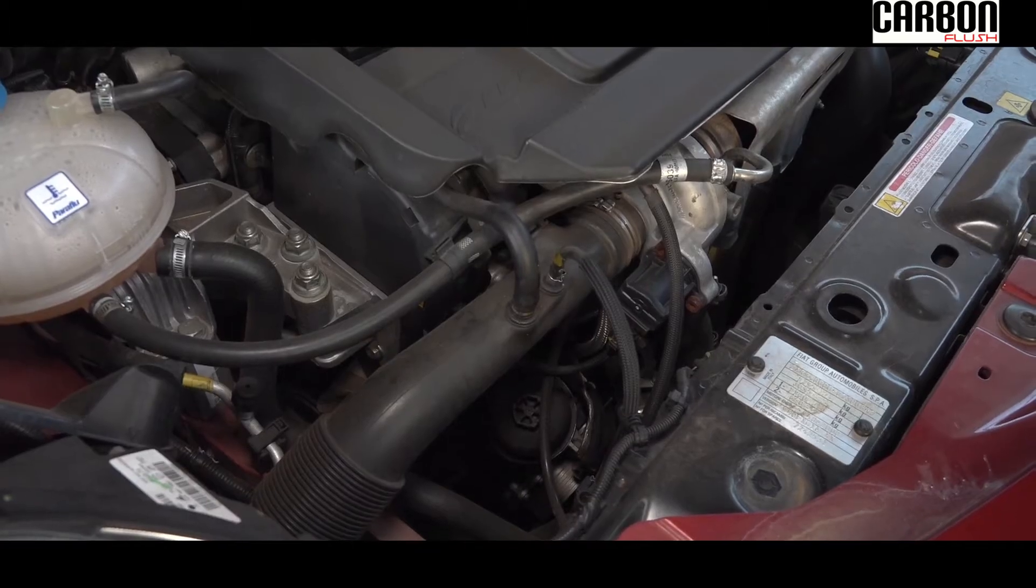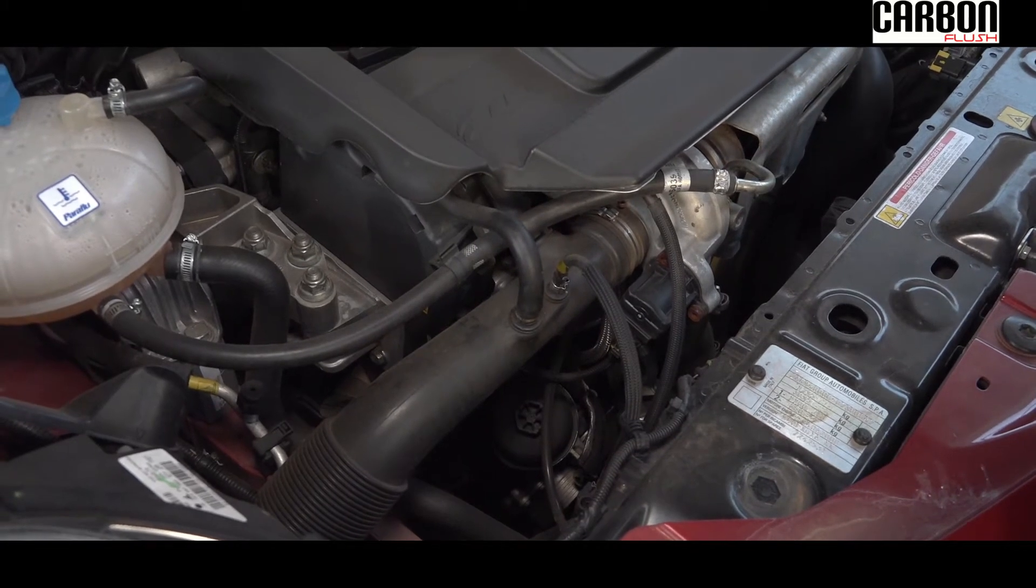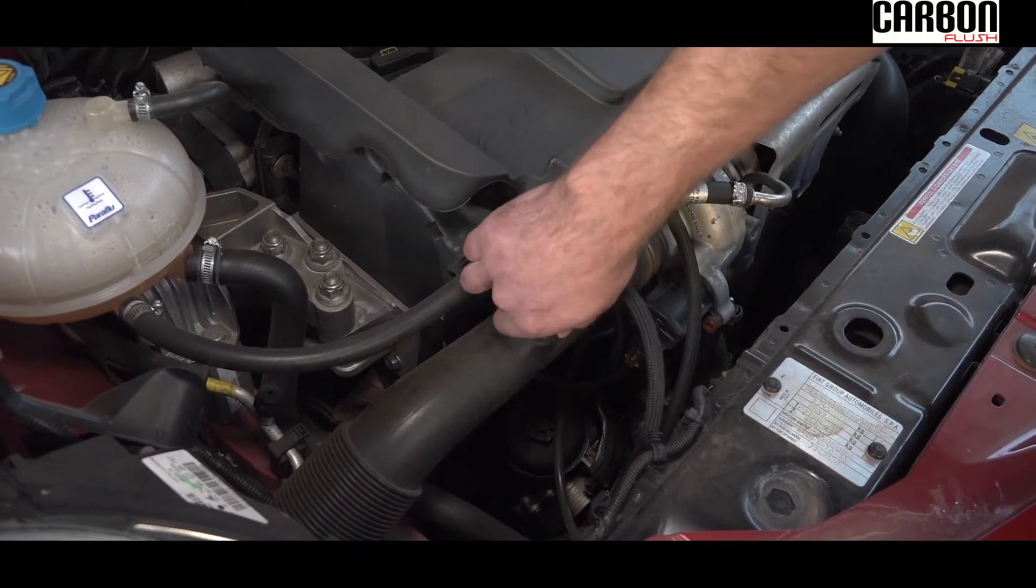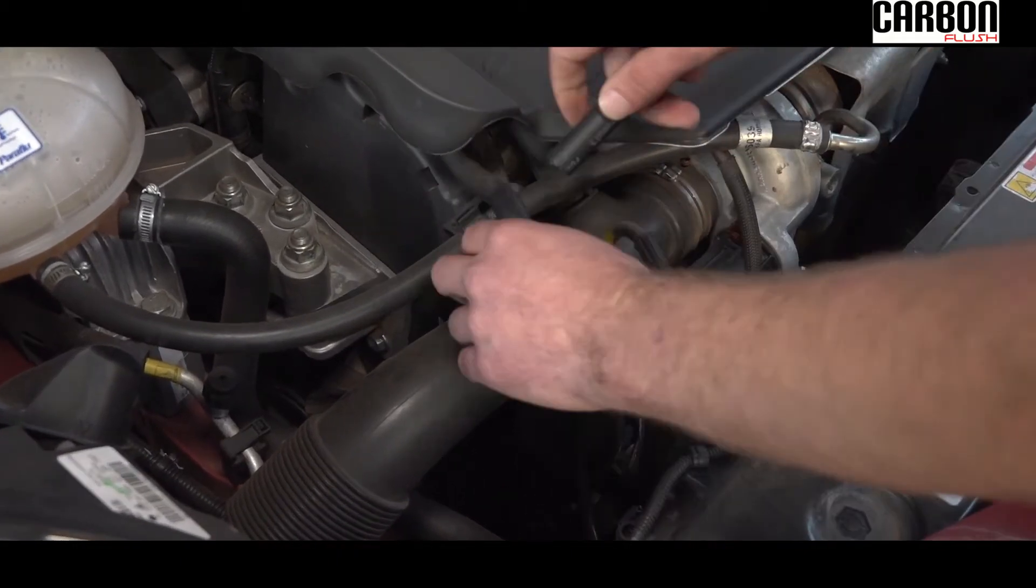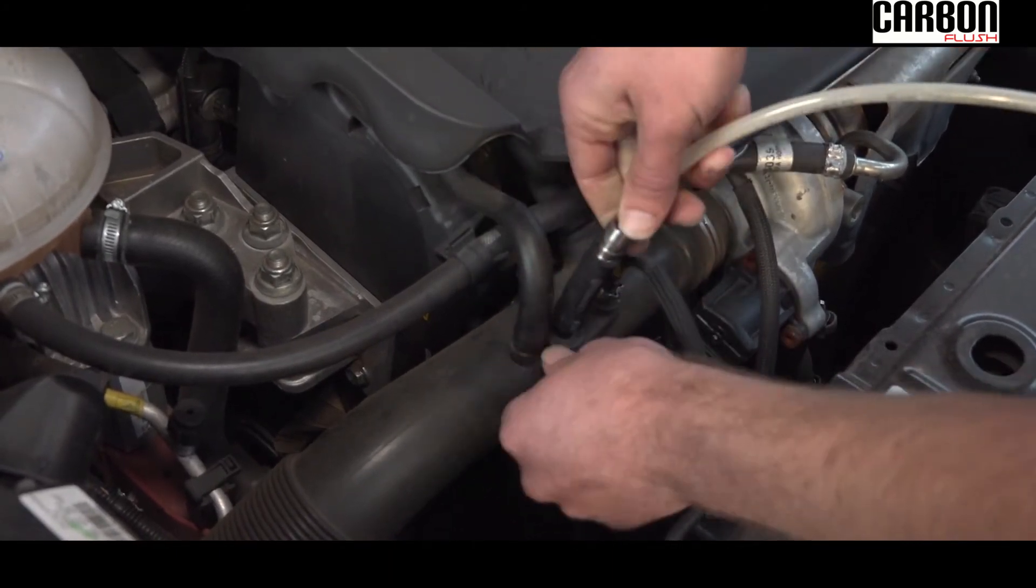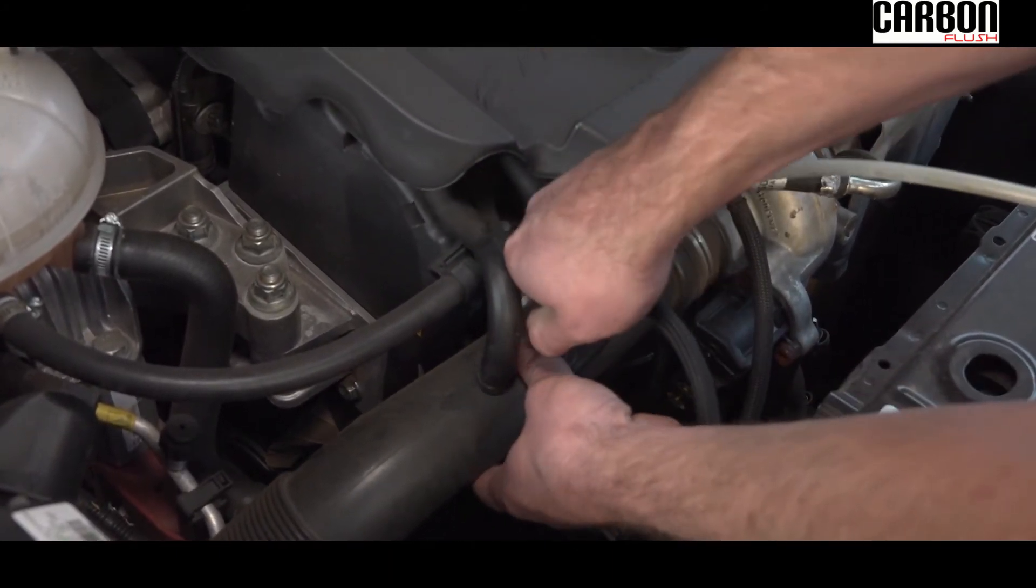Now we're going to install the inlet hose from the machine onto the vehicle's inlet to start the cleaning process. Removing this pipe, putting on the carbon clean inlet, and that's it.